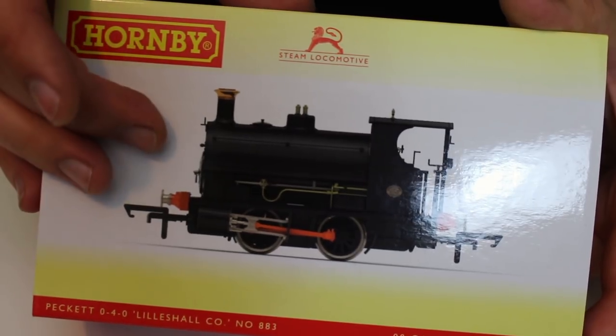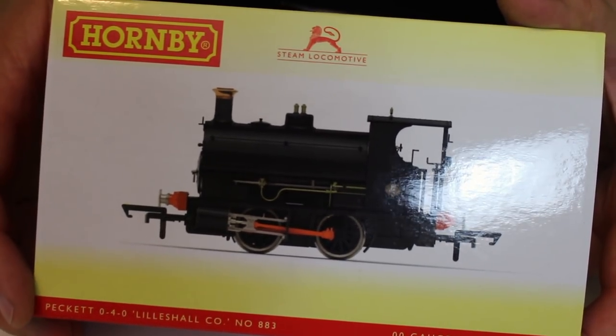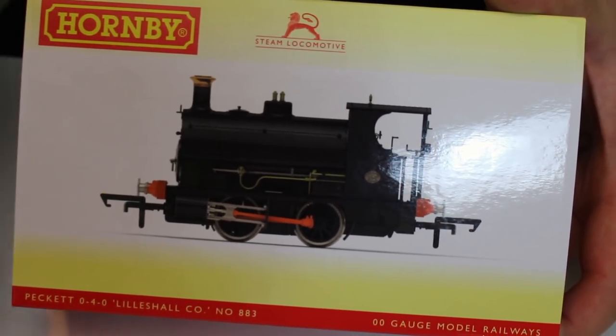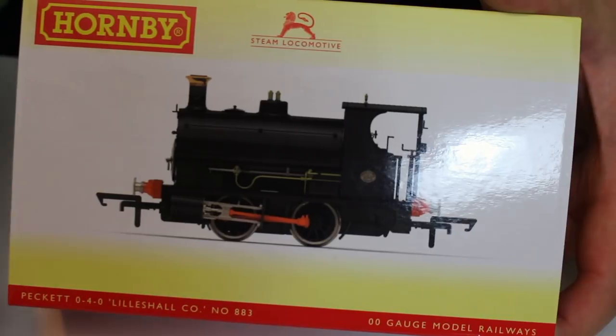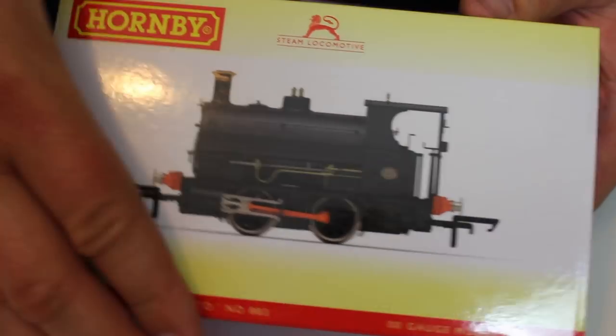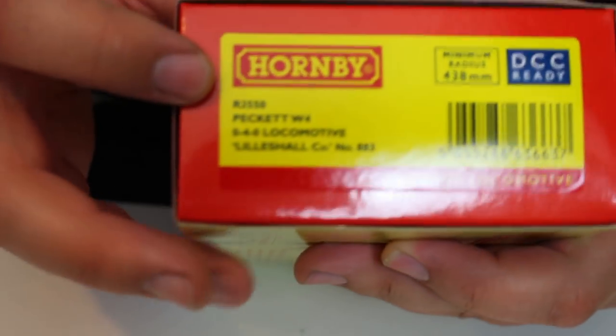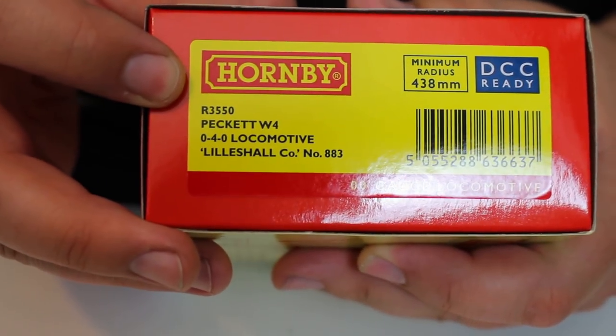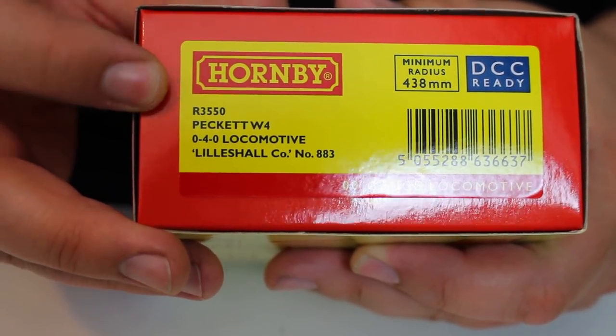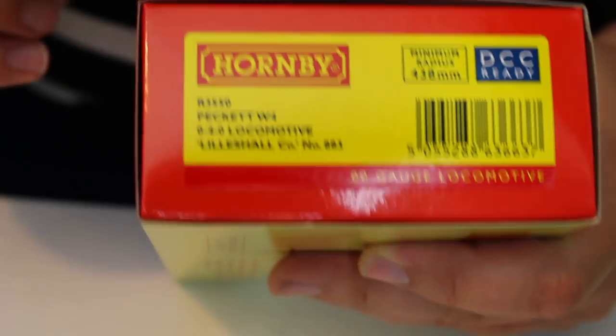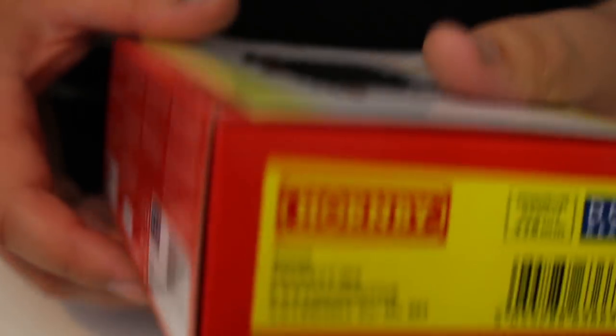If you look around online you can actually find photographs of this locomotive in use. Sadly you can also find photographs of it being scrapped, so those of a tender disposition be careful what you look for. But we've got the Hornby model now, catalogue number R3550 Peckett W4 0-4-0 locomotive and it actually carries its works number 883 rather than its fleet number 10.